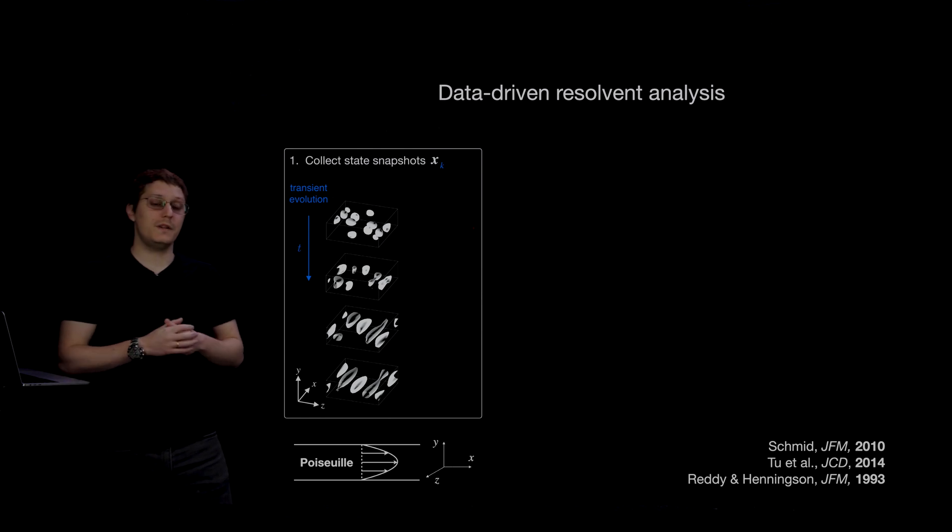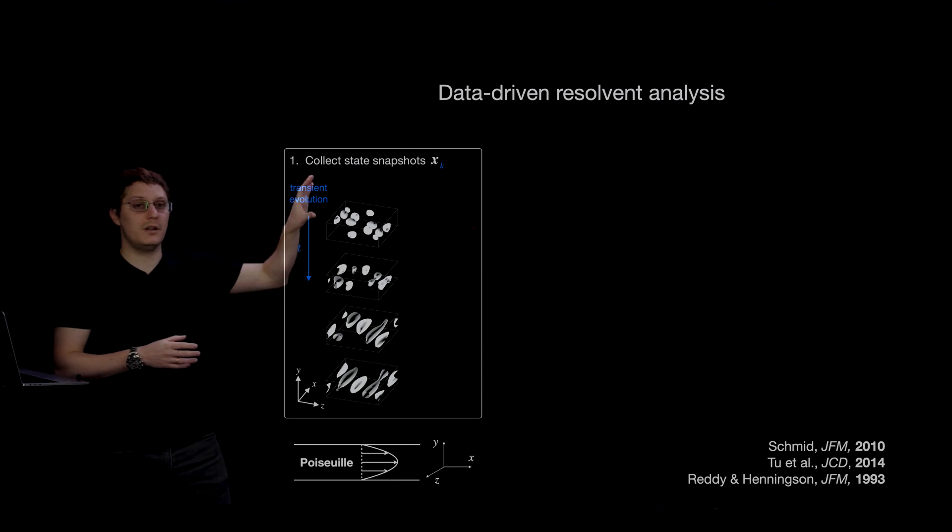The first step is to collect a sequence of state snapshots from recording of a transient simulation starting from a perturbation to the stable system.